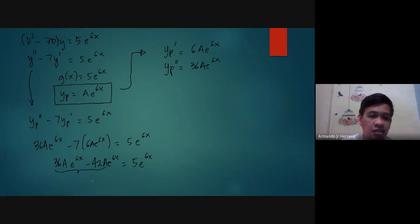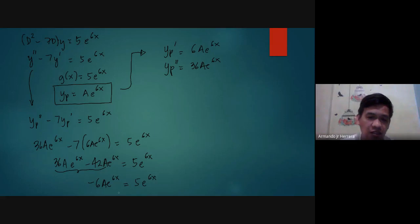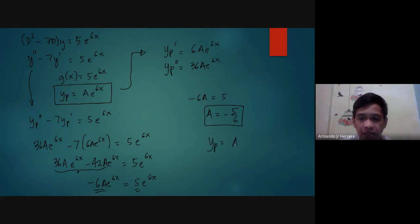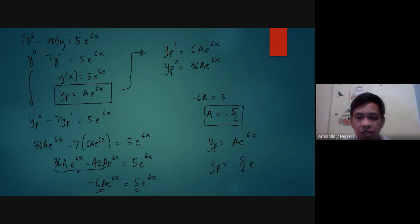This simplifies to negative 6ae to the 6x equals 5e to the 6x. Using equating coefficients, negative 6a equals 5, so a equals negative 5 over 6. Therefore, yp equals negative 5 over 6 times e to the 6x.